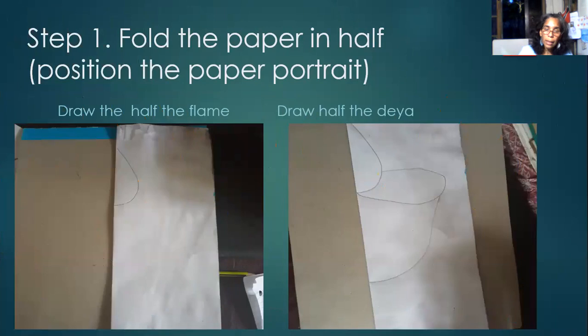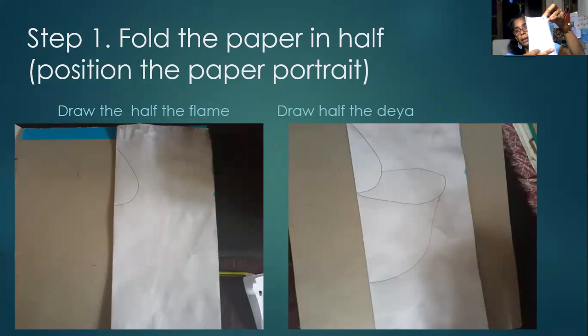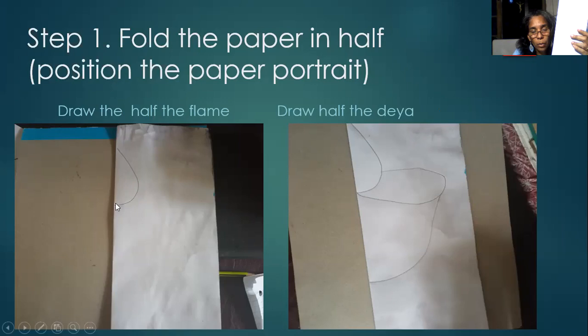Now, before we start, we need to understand how to position the paper. The first step is to fold your portrait paper in half — you're holding it this way and folding it in half. When you fold it in half, you see the fold line. On this fold line, you will draw the flame. You're drawing half of the flame — remember, we learned about the line of symmetry. Then you're going to draw the lip of the diya — it goes up and to the back — and then the base of the diya. This is where the oil is, this is where the flame is, and this is the body of the diya.